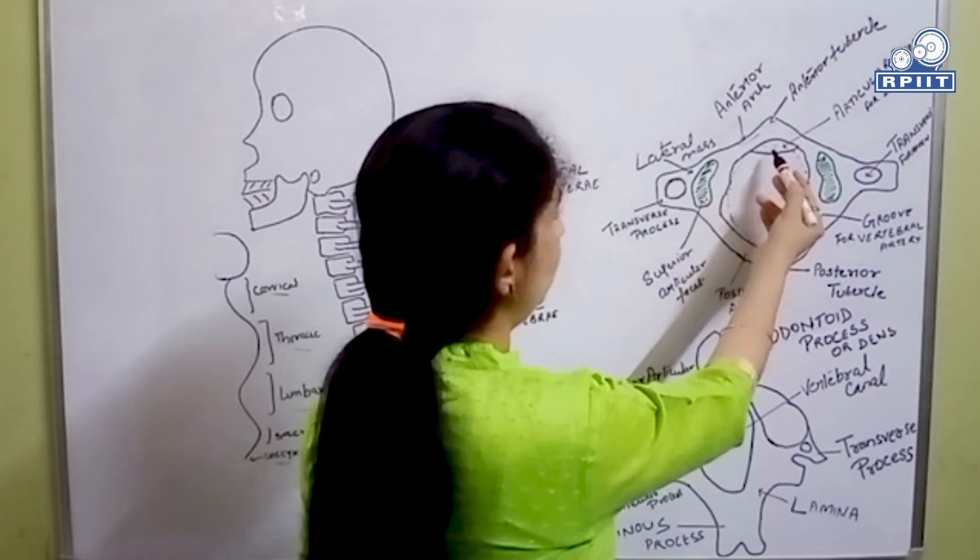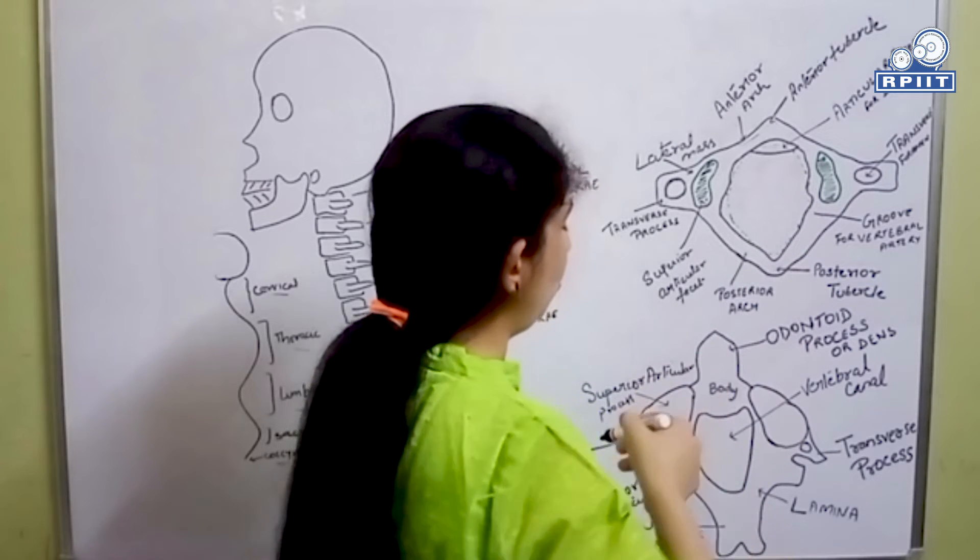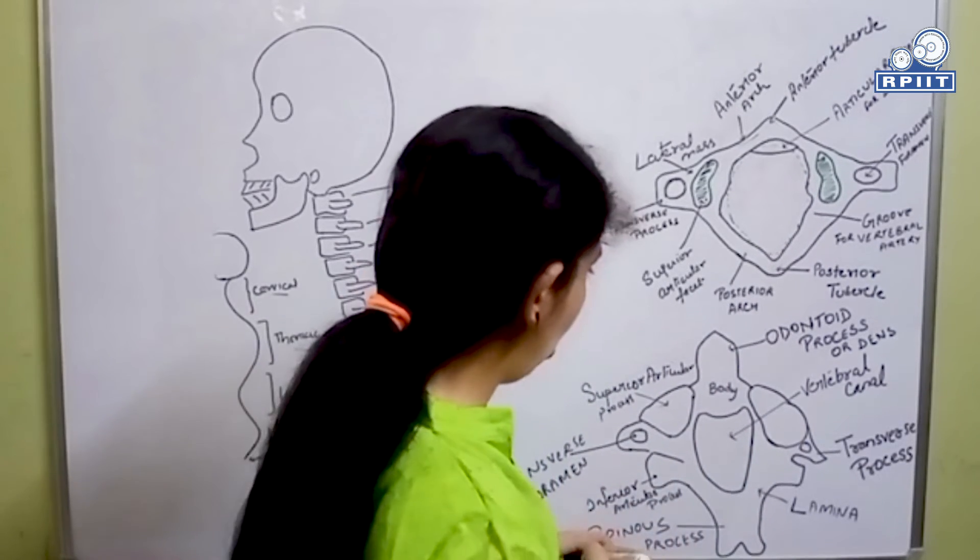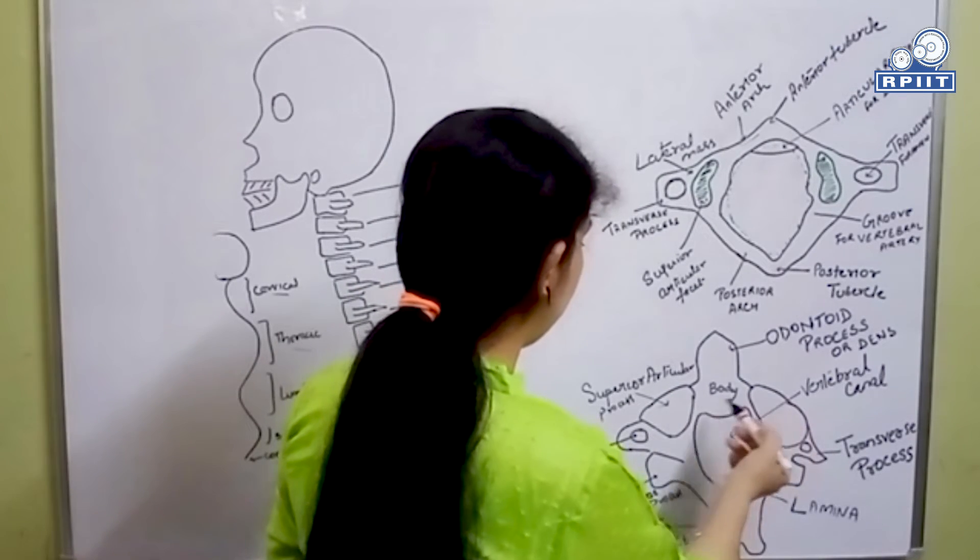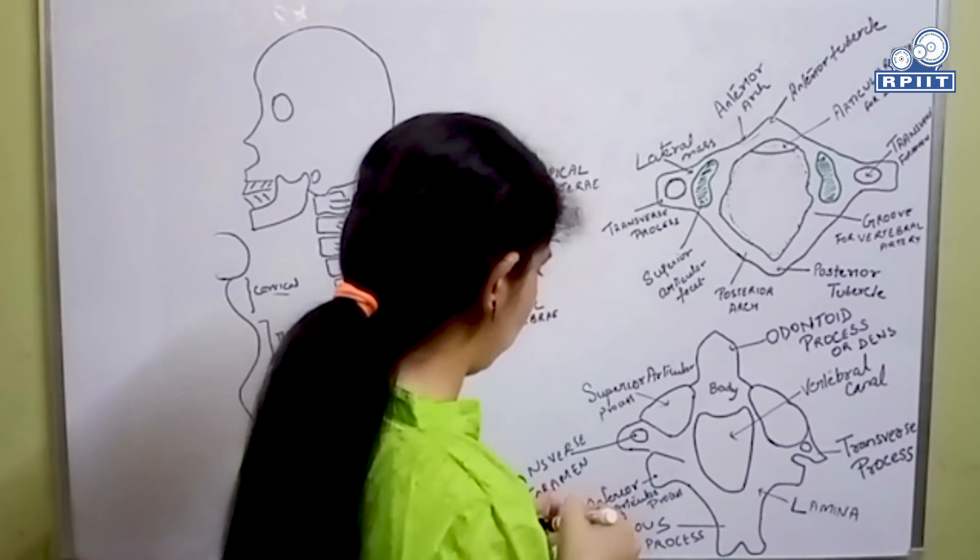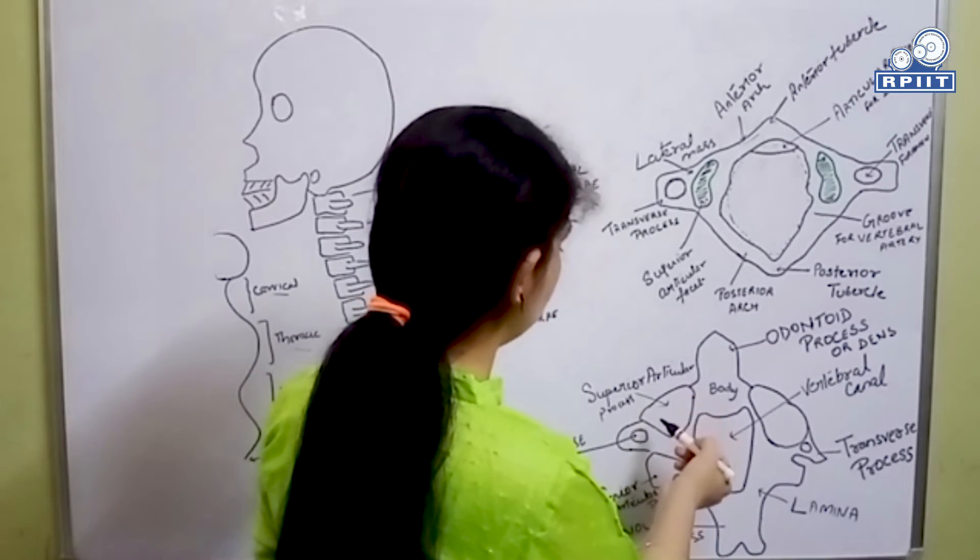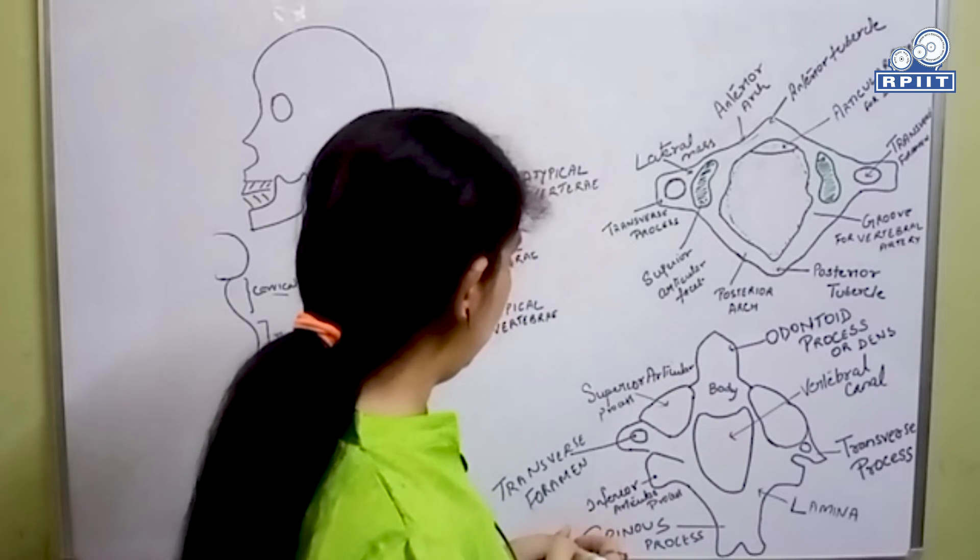These are the superior articular processes and these are the inferior articular processes. Both lie in different planes—the superior articular processes lie lateral to the inferior articular processes. They are flat and project upward and laterally.